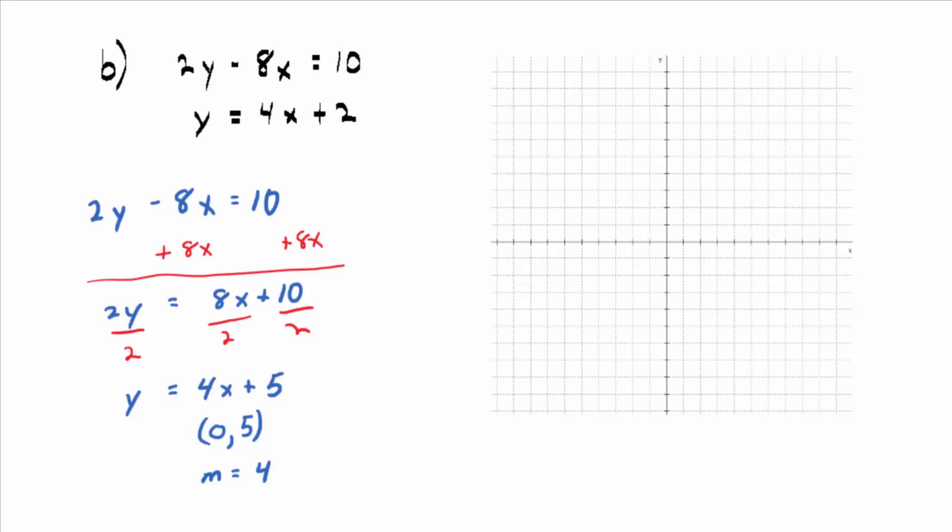Okay, so shortcut. Let's start with graphing the y-intercept. 1, 2, 3, 4, 5. And then where do I go from there? Yeah, you could go up, up what? 4 and over 1. So 1, 2, 3, 4, and over 1.